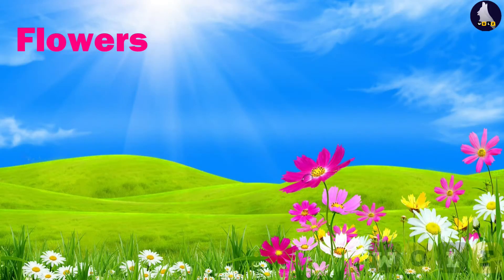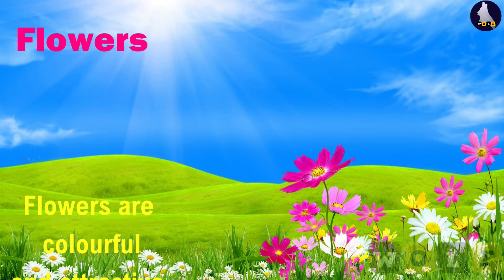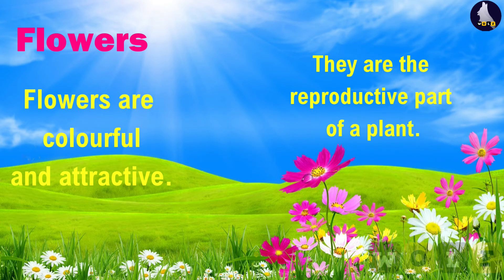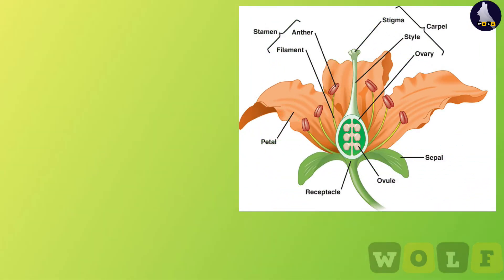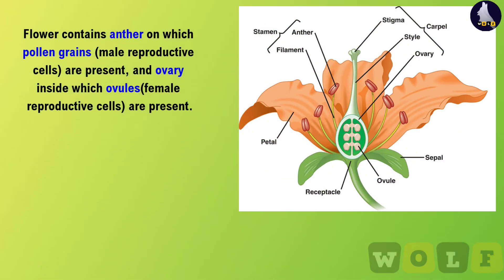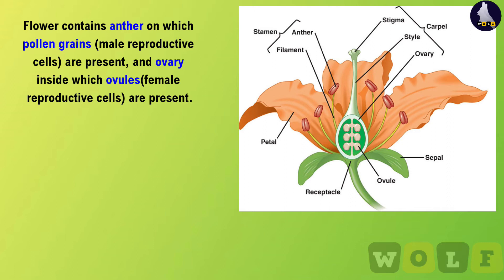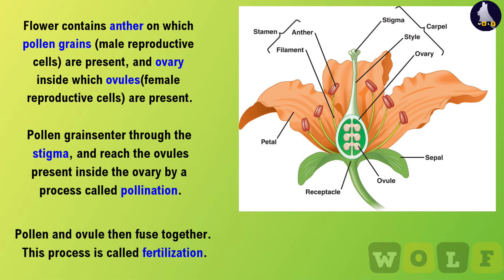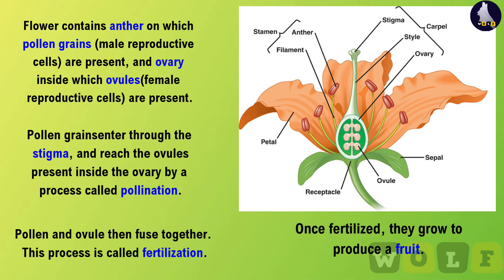Flowers are colorful and attractive. They are the reproductive part of a plant. A flower contains an anther on which pollen grains are present, and an ovary inside which ovules are present. Pollen grains enter through the stigma and reach the ovules present inside the ovary by a process called pollination. Pollen and ovule then fuse together — this process is called fertilization. Once fertilized, they grow to produce a fruit.